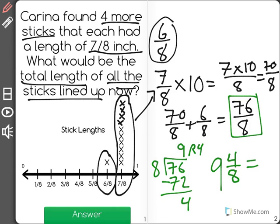When we simplify 4 eighths, we see that it's actually equal to 1 half, so the correct answer is 9 and 1 half inches when you add them all up.